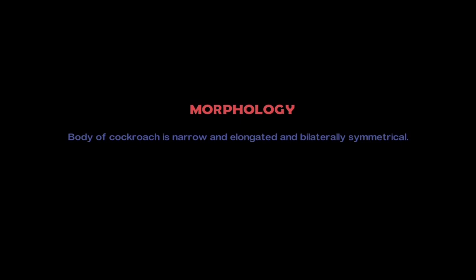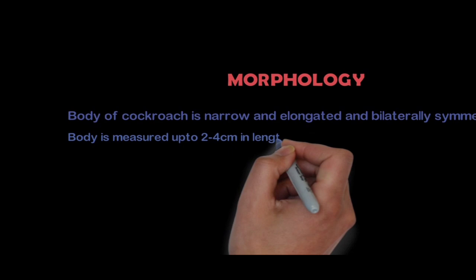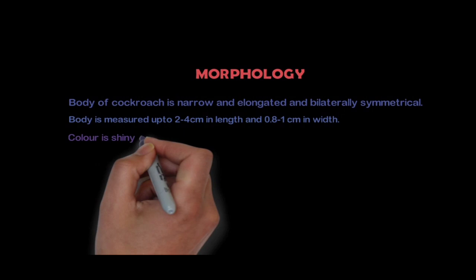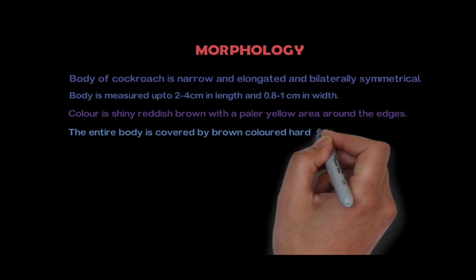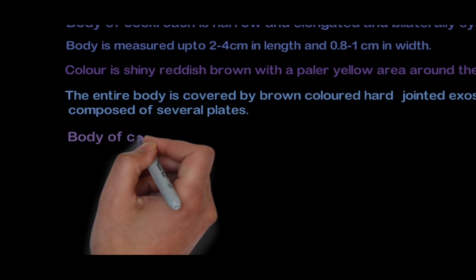Morphology: The body of the cockroach is narrow, elongated and bilaterally symmetrical. The body measures up to 2 to 4 cm in length and up to 0.8 to 1 cm in width. The entire body is covered by a brown, hard-jointed exoskeleton composed of several plates. The body of the cockroach is divided into three segments: head, thorax, and abdomen.